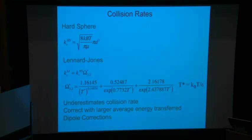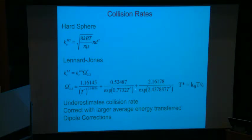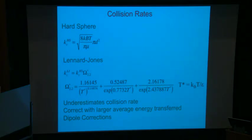To implement this in an ab initio way you need to calculate the collision rate. A commonly used expression is the Lennard-Jones collision rate — the hard sphere rate times an omega_{2,2}* correction factor, with a well-parametrized expression for Lennard-Jones interactions. You need the epsilon and sigma parameters, and this lets you make reasonable estimates of collision rates. This is what people basically use in practice.